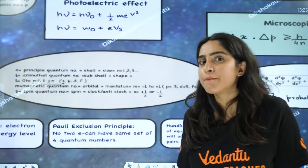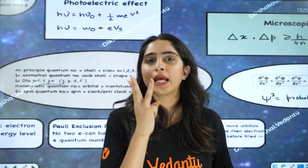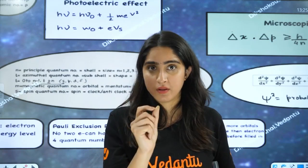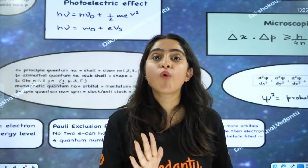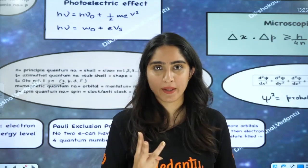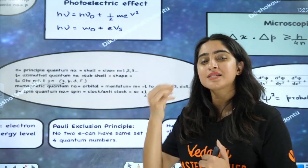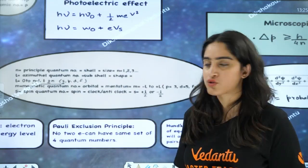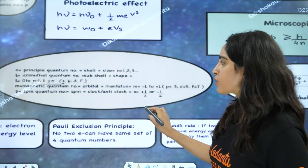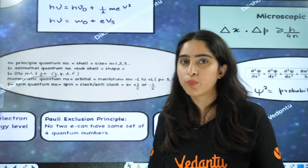M is the magnetic quantum number defining orbitals. For example, we draw 3 boxes for the P subshell and 5 boxes for the D subshell, meaning P has 3 orbitals. L defines the subshell and tells how many orbitals exist. The magnetic quantum number M equals minus L to plus L.